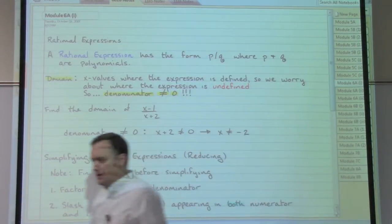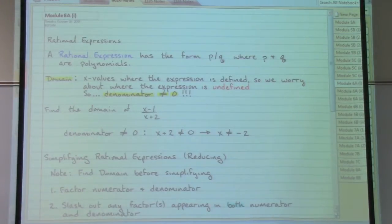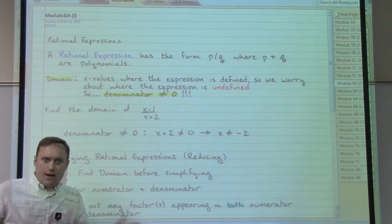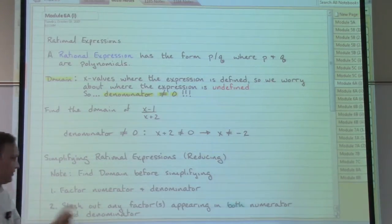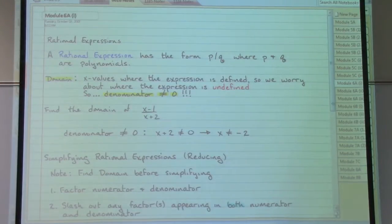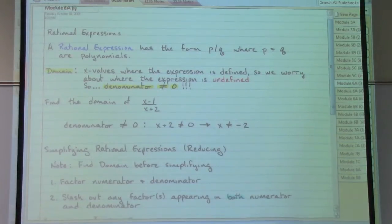A factor that appears in both the top and the bottom would simplify to just the number one, therefore that part can be removed. So we can just say we slash out those factors that appear in both the numerator and the denominator.